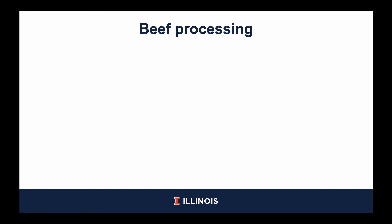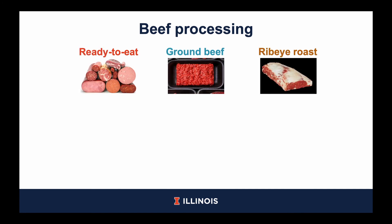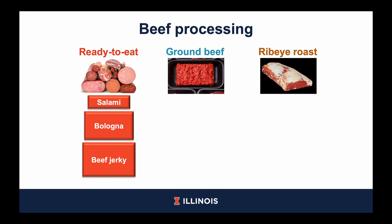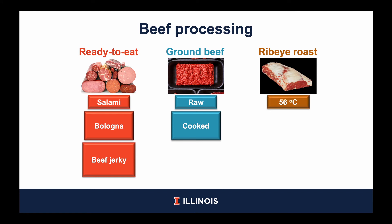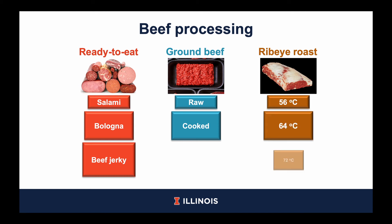Moving on to the second experiment, we analyzed eight different beef products. We looked at three types or cuts of beef: ready-to-eat products, ground beef, and ribeye roasts. Within each cut, we evaluated different processing methods. For the ready-to-eat products, we evaluated salami, bologna, and beef jerky. For the ground beef, we evaluated it in the raw form and fully cooked form. For the ribeye roasts, they were heated to different internal temperatures similar to how the pork loins were heated — 56, 64, and 72 degrees Celsius.